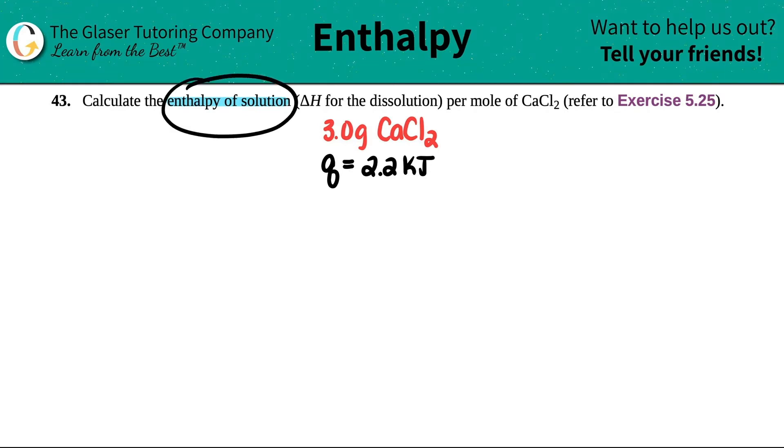So the enthalpy of the solution—remember this is not the reaction—the enthalpy of the solution was 2.2 kilojoules. And in order for that 2.2 kilojoules to be absorbed because it's a positive number, 3 grams of the calcium chloride were used.